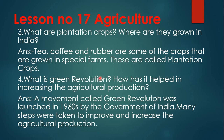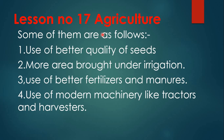Fourth question: what is the green revolution and how has it helped in increasing agricultural production? A movement called the green revolution was launched in the 1960s by the government of India. Many steps were taken, including: use of better quality seeds, more area brought under irrigation, use of better fertilizers and manures, and use of modern machinery like tractors and harvesters.